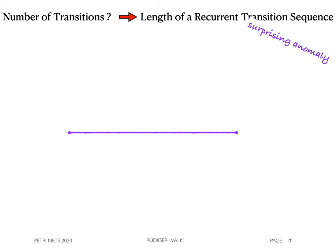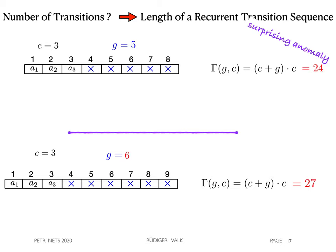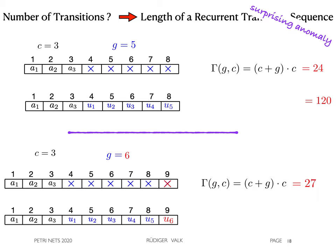Experiments show a surprising anomaly. For the case of three cars and five gaps, we obtain the length c plus g times c equals 24. Now, we take one more gap and the number is 27, which is not surprising. However, after the switch to the case of counter-cars, we obtain a value of 120 by a factor of 5. Even more surprising is the case with one more counter-car, where the value is reduced now to 54.